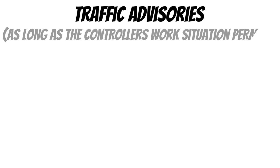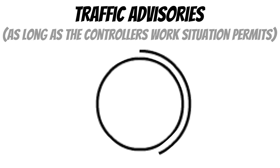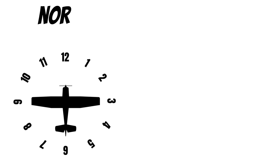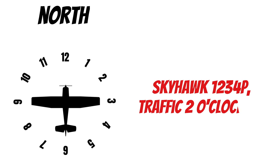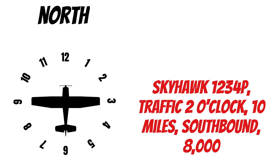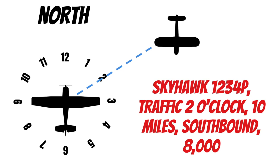Traffic advisories are given based on positions using hours on a clock — imagine looking down at the top of your airplane with 12 o'clock at the front and 6 o'clock at the back. These are only given as long as the controller's workload permits. For example, on a northbound heading: 'Skyhawk 1-2-3-4 Papa, traffic 2 o'clock, 10 miles, southbound, 8,000.' You'd be looking for traffic in line with the 2 o'clock position, 10 miles out, at 8,000 feet heading southbound.